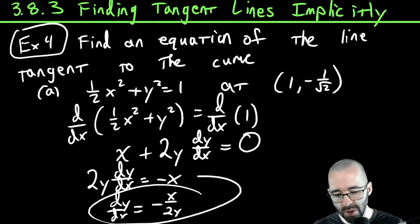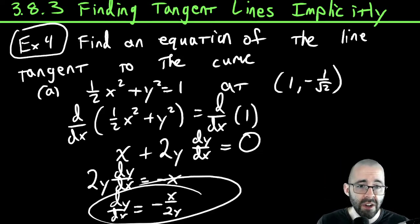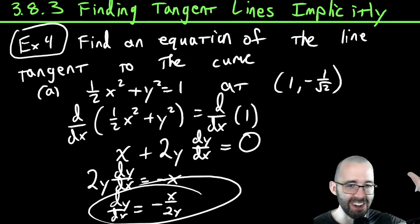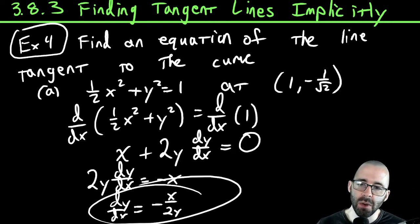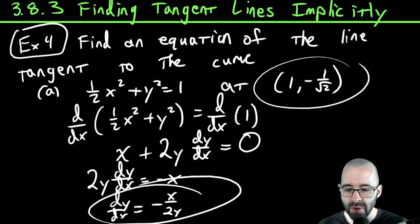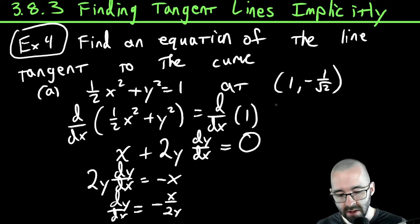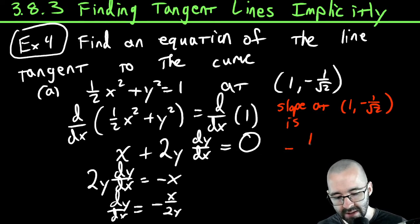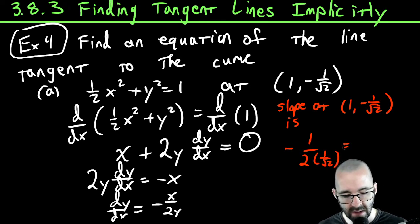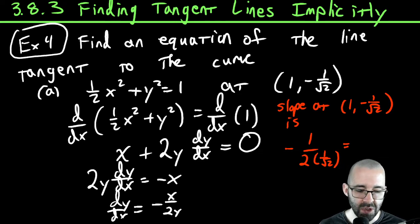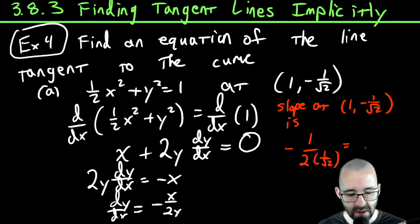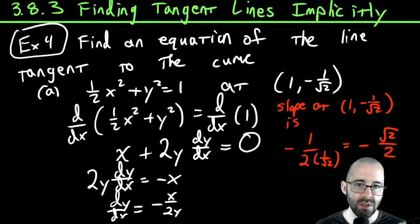This is the slope function. We're looking at what is the slope at the specific point (1, -1/√2). The slope at that point is negative x over 2y, which gives negative 1 over 2 times negative 1/√2. Simplifying by multiplying top and bottom by √2, we get 1/√2.